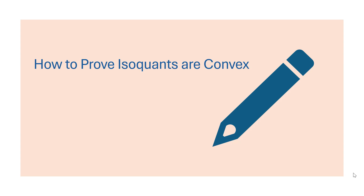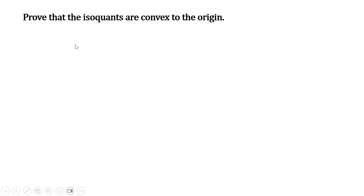Hello. In this video we're going to show how to prove isoquants are convex, or that they display the property of the diminishing marginal rate of technical substitution. So to prove that isoquants are convex to their origin, here's a production function that will give rise to such isoquants.